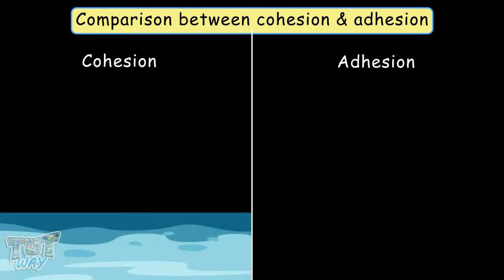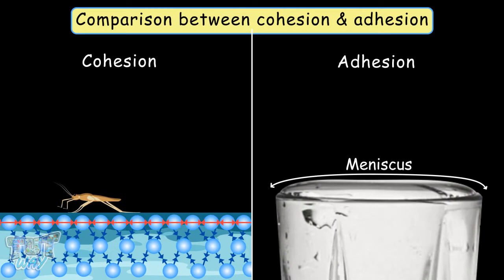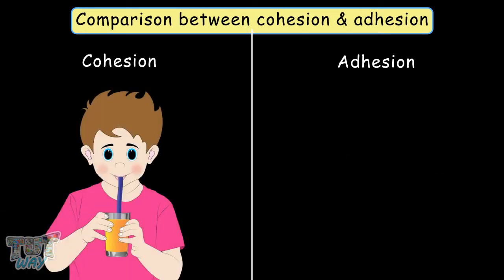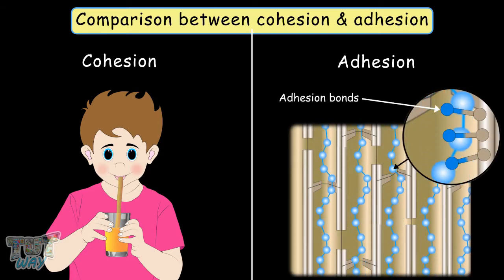Cohesion is responsible for the surface tension of a liquid that forms a skin on the water upon which insects can move as if they walk on a solid surface. Adhesion is responsible for the formation of a meniscus. Drinking with the help of a straw is also possible due to cohesion. Adhesion exists between water and the plant cell walls.